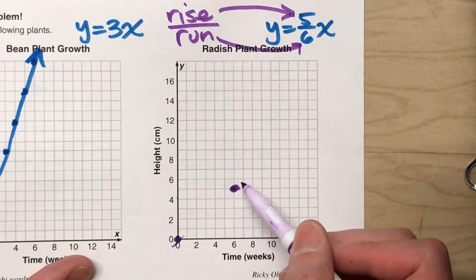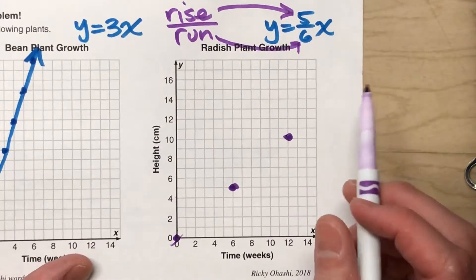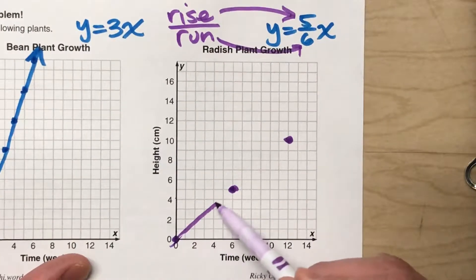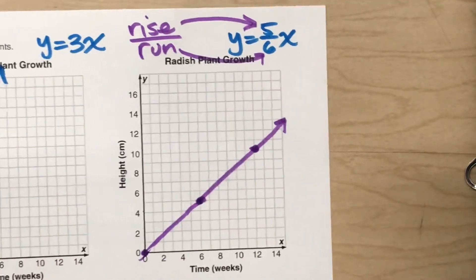And then from there, continue it. Up 5, right 6, plot a point. And if I connect those dots, this is going to be the graph for my line.